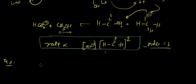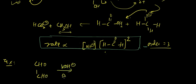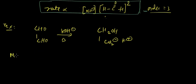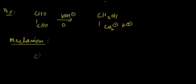Let's take another example where we have a dialdehyde with CHO and CHO both attached. In basic medium with heating, we get CH2OH on one end and CO2-K+ on the other. The mechanism follows the same idea as the previous one.